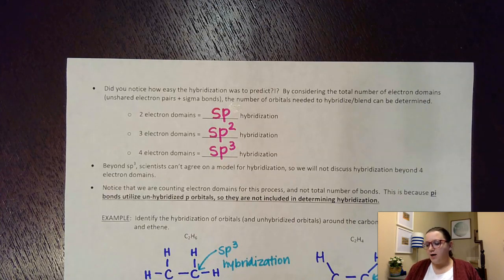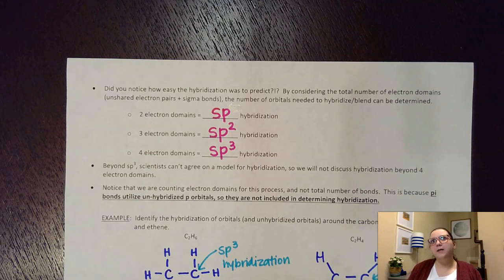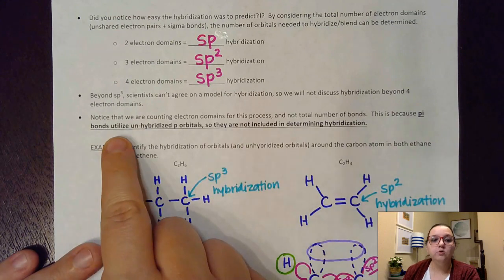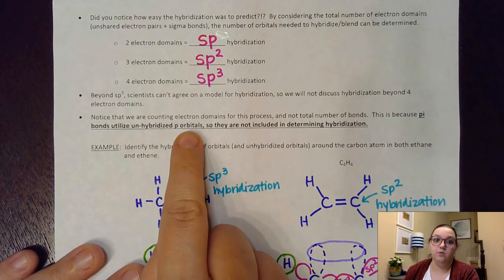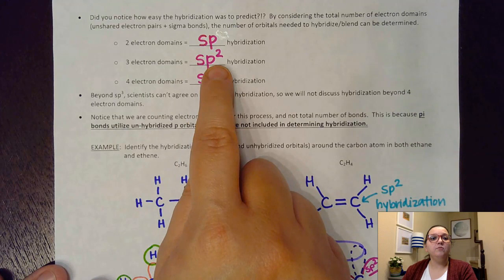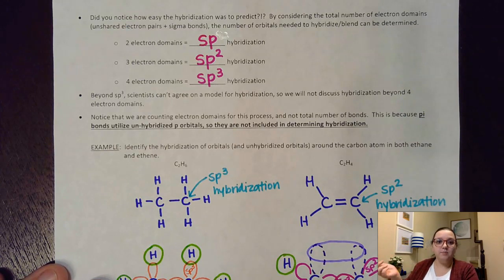However, I will warn you: when you have this hybridization, keep in mind that it does not take into account the total number of bonds — it only takes into account the electron domain. So sometimes we can have three domains, but one of them be a double bond, and I wouldn't take that into account here. The reason why is because pi bonds utilize unhybridized P orbitals. So you might have SP2 hybridization, but if one of those was a double bond, then the third P orbital would be used on its own to accommodate for that pi bond. We'll see a picture of that here in just a little bit.